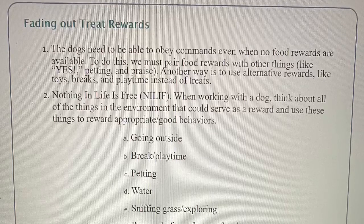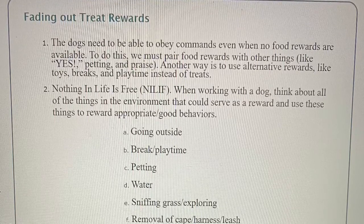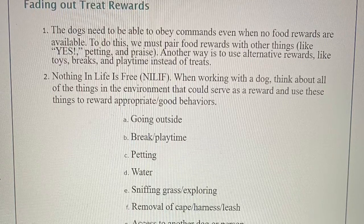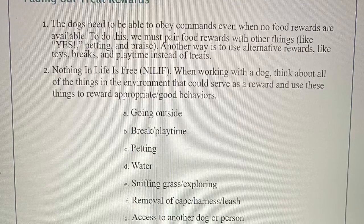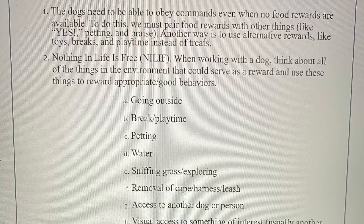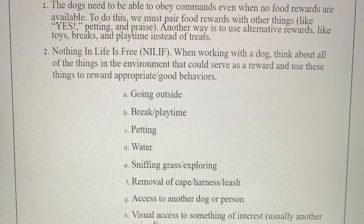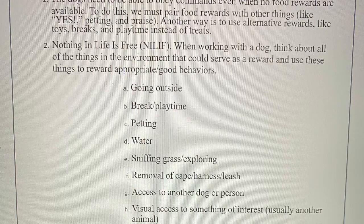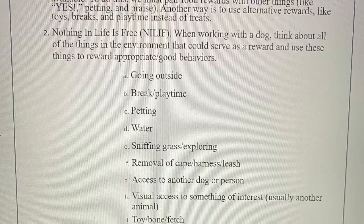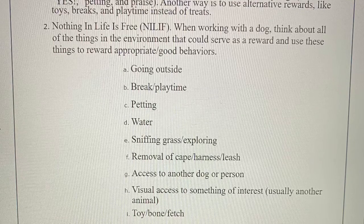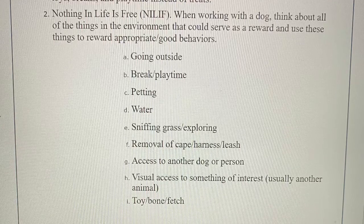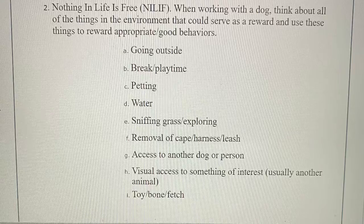Fading Out Treat Rewards. Rule 1: Dogs need to be able to obey commands even when no food rewards are available. To do this, we must pair food rewards with other things like yes, petting, and praising. Another way is to use alternative rewards like toys, breaks, and playtime instead of treats. Rule 2: Nothing In Life Is Free — NILIF. When working with a dog, think about all of the things in the environment that could serve as a reward and use these to reward appropriate behavior: going outside, break or playtime, petting, water, sniffing grass and exploring, removal of cape/harness/leash, access to another dog or person, visual access to something of interest such as another animal, or a toy, bone, or fetch.